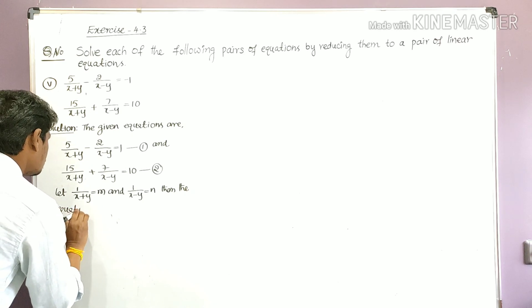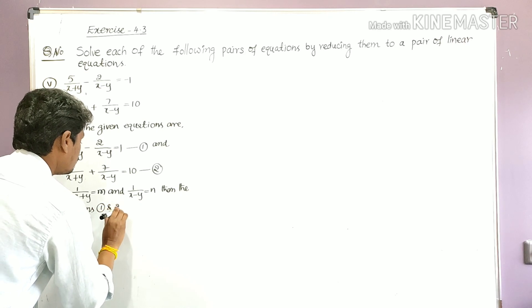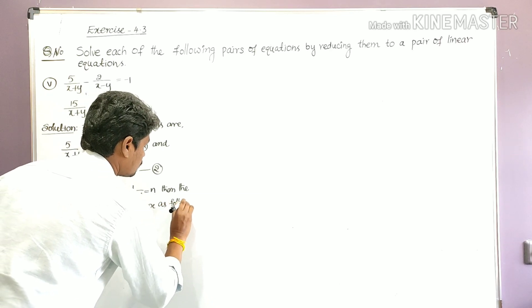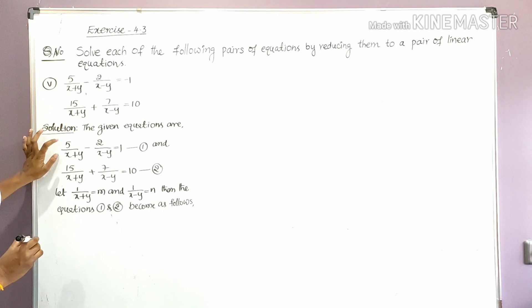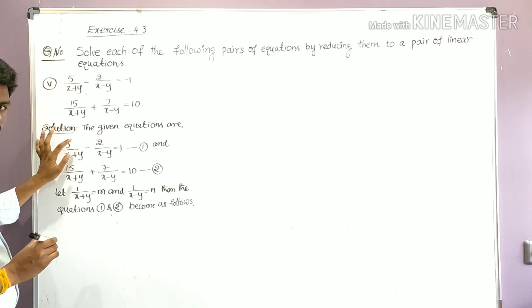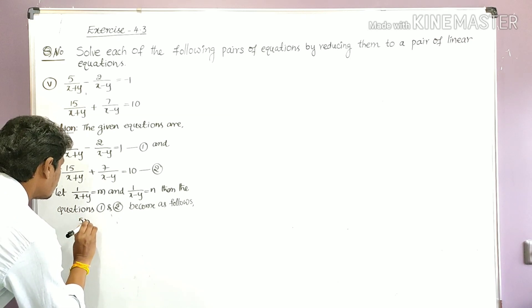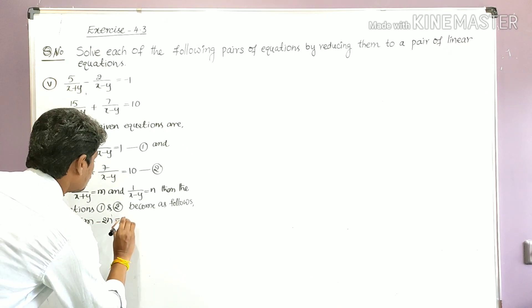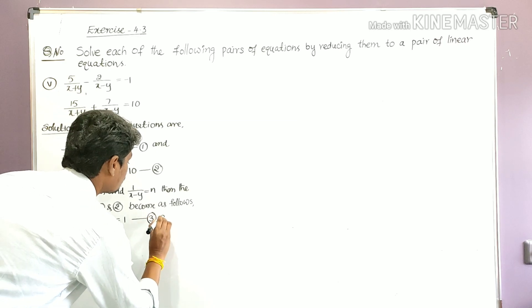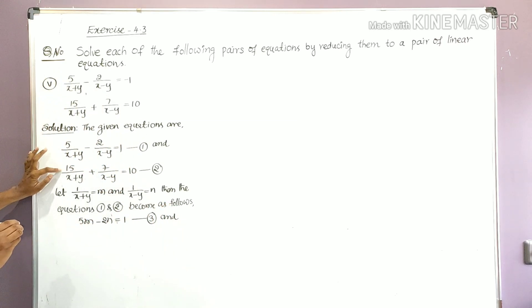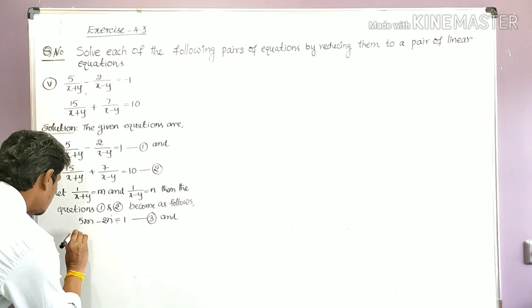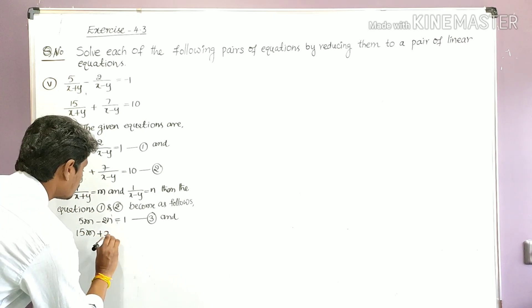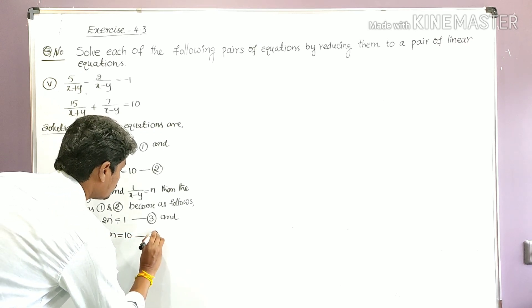With these substitutions, Equations 1 and 2 become: Equation 3: 5m minus 2n equals −1, and Equation 4: 15m plus 7n equals 10. Here, 5/(x+y) becomes 5m, and 2/(x−y) becomes 2n for Equation 3; and 15/(x+y) becomes 15m, and 7/(x−y) becomes 7n for Equation 4.